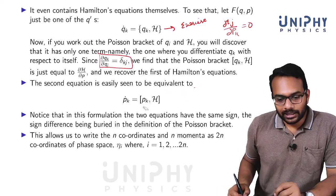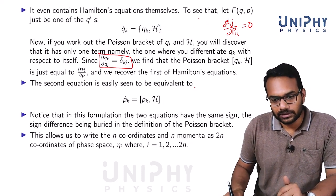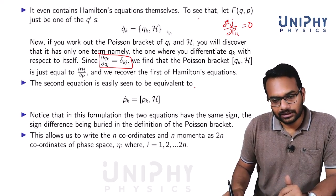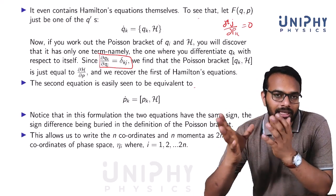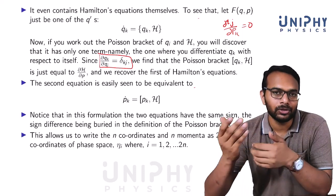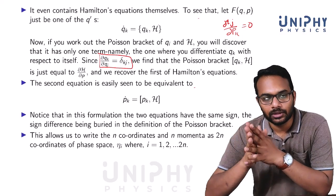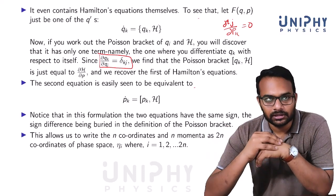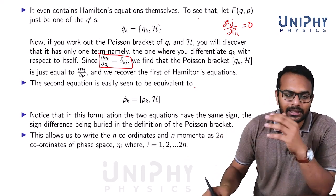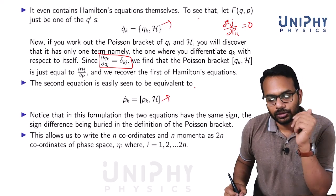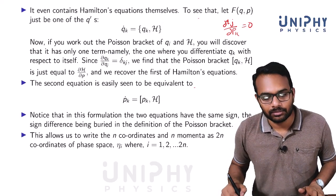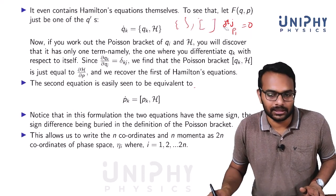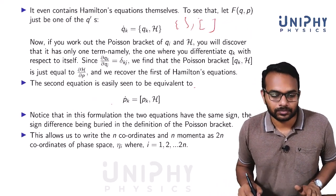Notice that I have used a curly bracket here. It does not matter which bracket we use — in exams, Poisson brackets are sometimes denoted with curly brackets and sometimes with square brackets, and they can be used interchangeably within classical mechanics. Once we go to quantum mechanics, we will use a different notation to distinguish Poisson brackets from commutators.